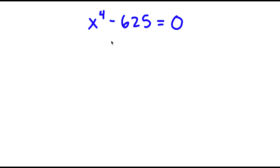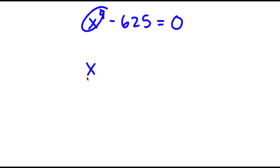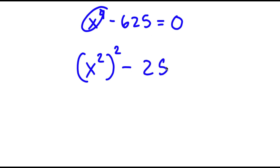In this problem, I have x to the power of 4 minus 625 is equal to 0. To solve this, I'm going to first rewrite x to the power of 4 as x squared to the power of 2, and then we write 625 as 25 squared.